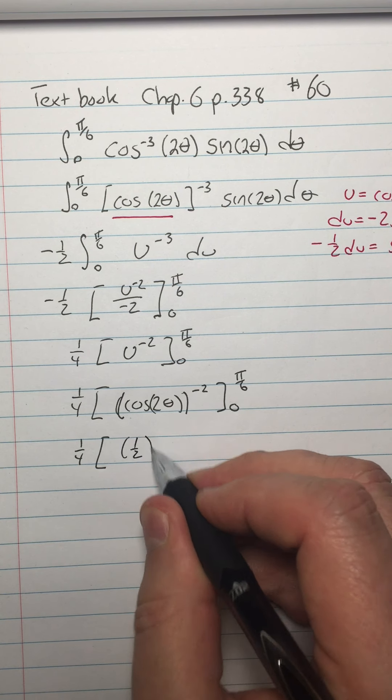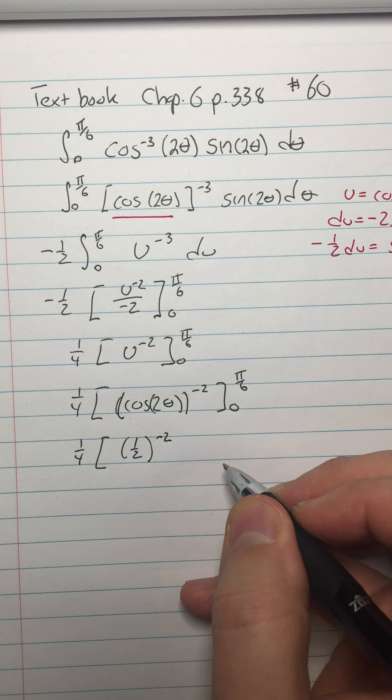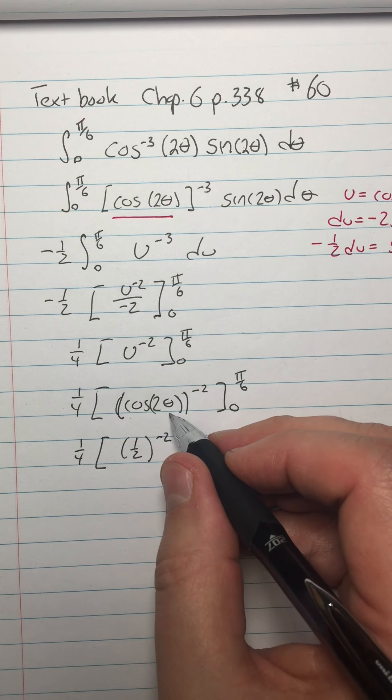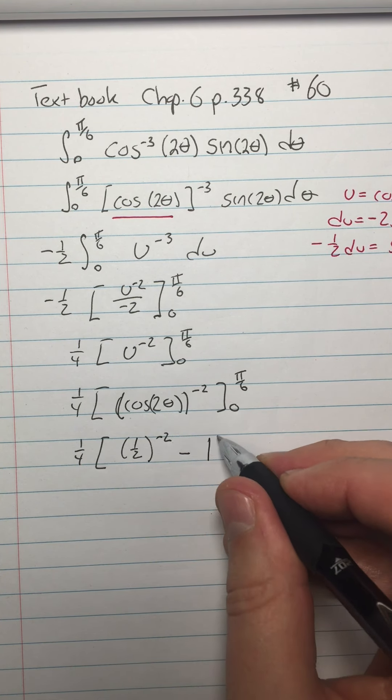So I'm going to have one-half to the negative 2, and then minus, and then I'm going to put in the 0. So I have cosine of 0 is 1, 1 to the negative 2 is just 1.